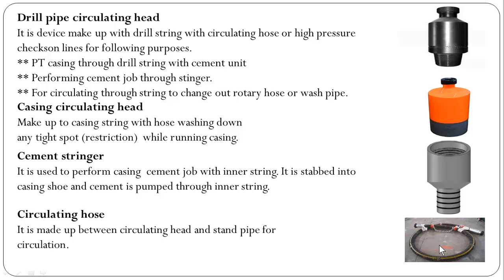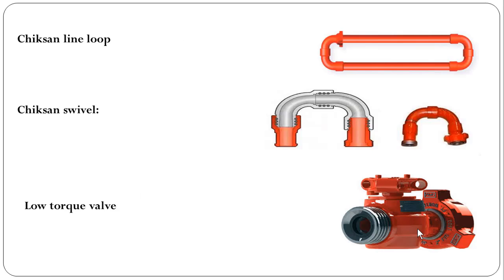Circulating hose. It is made up between the circulating head and the stand pipe for circulation. This is a piece of hose that has 1502 hammer union connections, and we can make it up with the stand pipe, the drill pipe circulating head, and the casing circulating head to circulate through this hose.